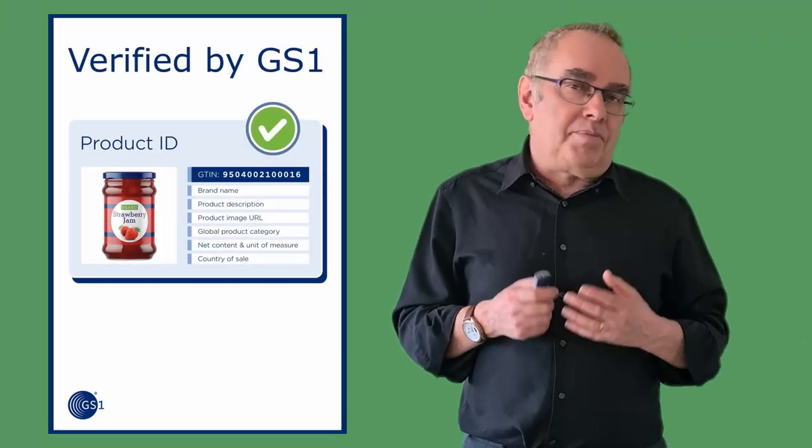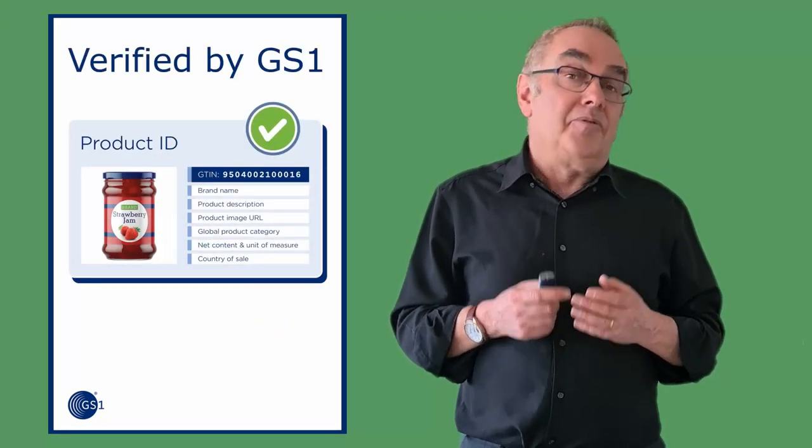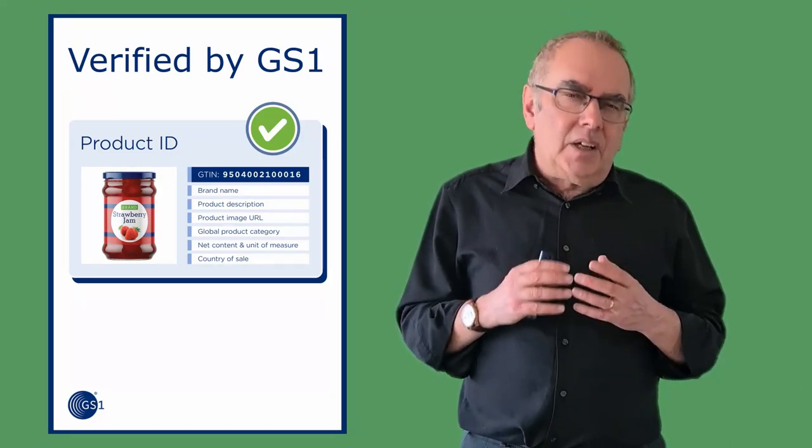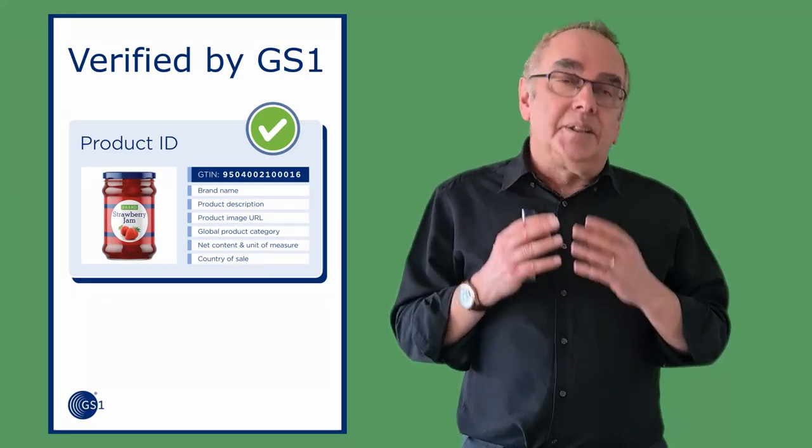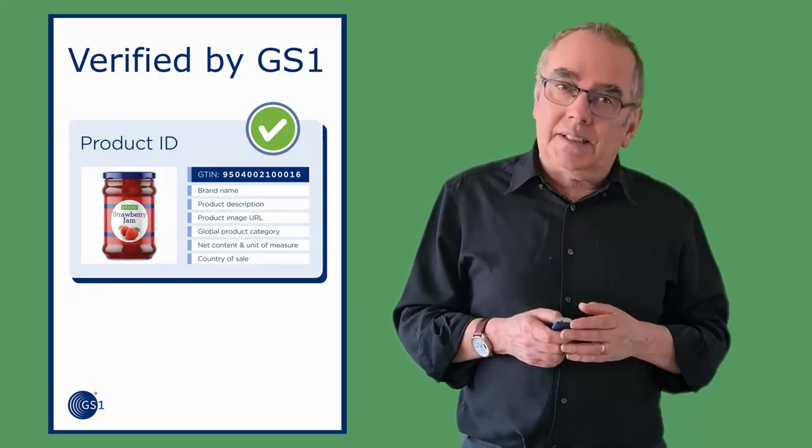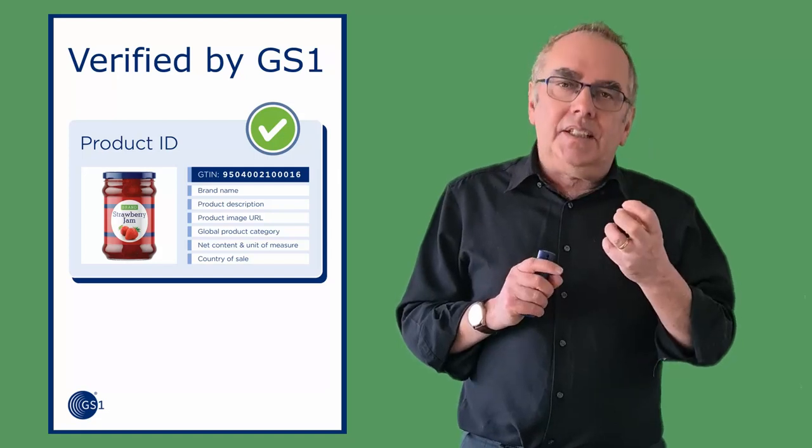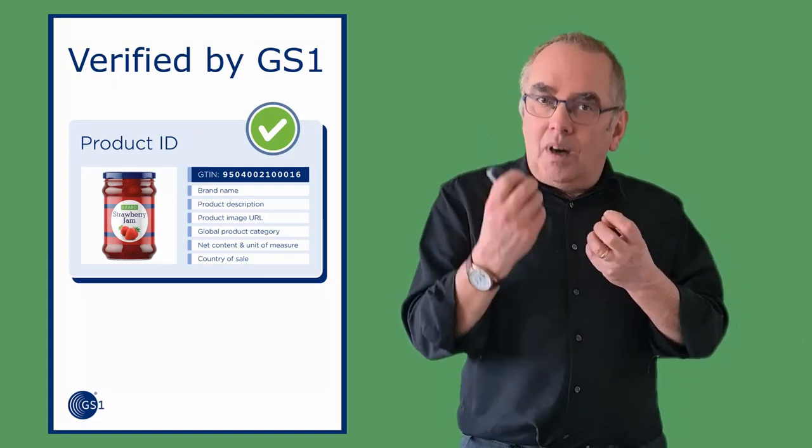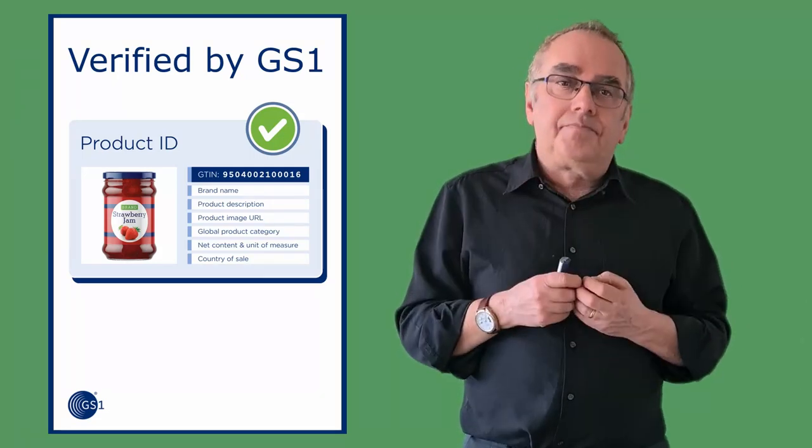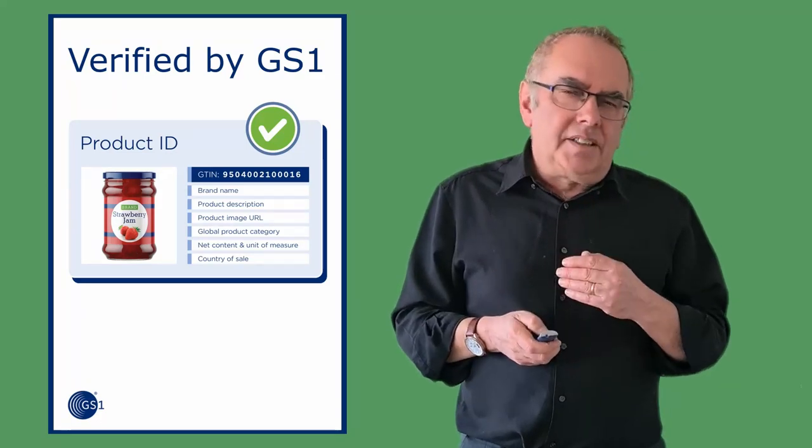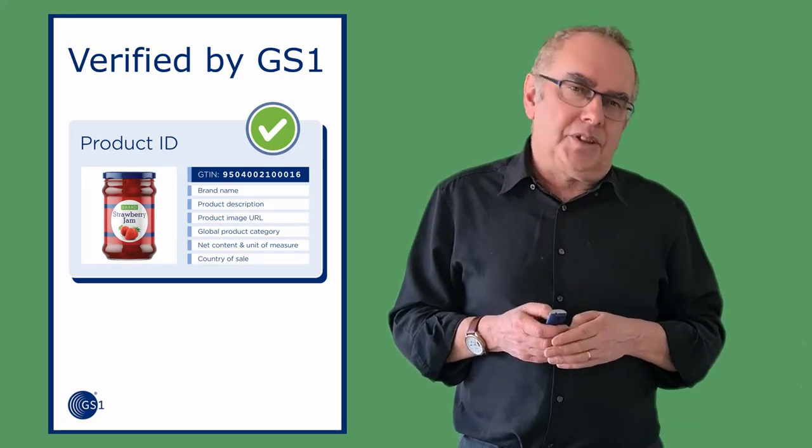To support our product identification standards, our Verified by GS1 service offers a thin layer of data that allows retailers to be sure that the correct identifier is being used for the correct product. It's not a full description, that's not what it's for. It's there so that if someone says, I have product X for sale and it has identifier Y, you can check. That's useful for all kinds of retailers, including marketplaces, in the continual fight against counterfeit goods.